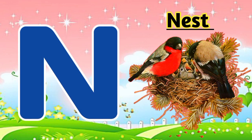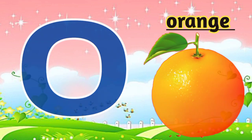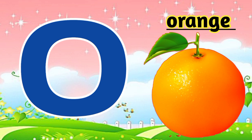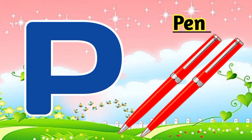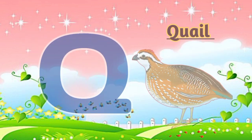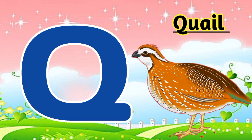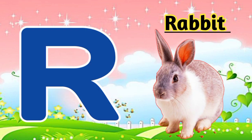N for Monkey. N for Nest. N for Nest. O for Orange. O for Orange. P for Pen. Q for Quail. R for Rabbit.